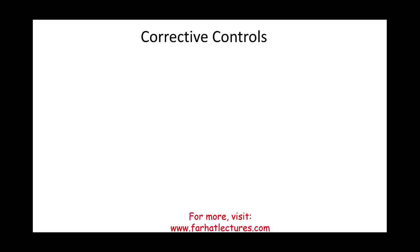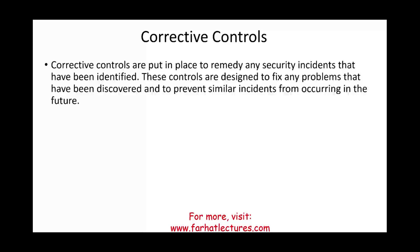Corrective controls come into play once preventive measures failed and someone has gotten into the system. Now you want to make sure everything is fixed and, most importantly, lessons are learned. Corrective controls are designed to remedy any security incident that has been identified, fix the problems discovered, and prevent similar incidents from occurring in the future.